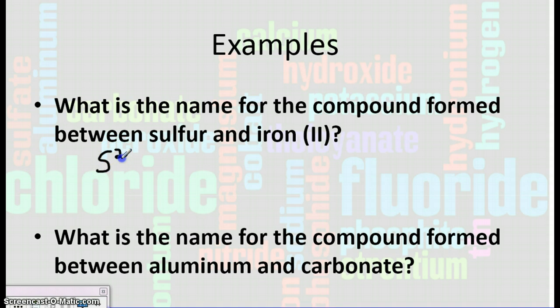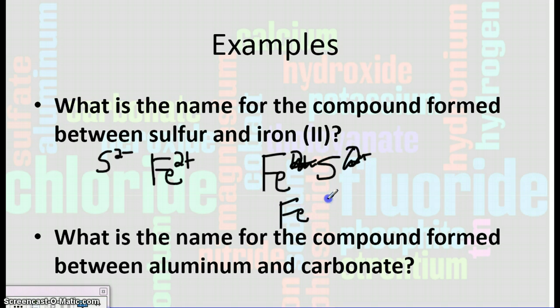So we got sulfur. He's got a 2- charge. And then we got iron. And he's got a 2+ charge. Iron needs to go first because he's the positive one. And then sulfur will come second. Because they have the same charge, it would cancel. And then we just end up with the formula FeS.